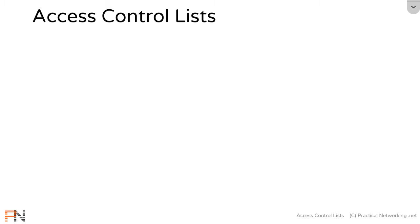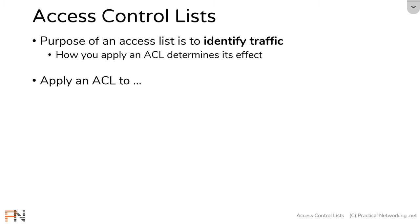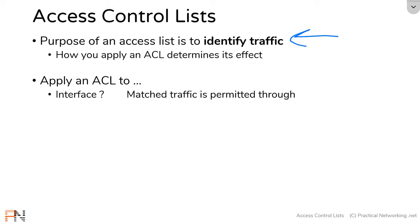At its core, an access control list is simply a tool you use to identify traffic. How you apply the access list then determines what the access list is actually doing. For example, if you apply an access list to an interface, then any traffic that is identified by your access list is being permitted through that interface. This is the most common application of an access list, but there are many other use cases.